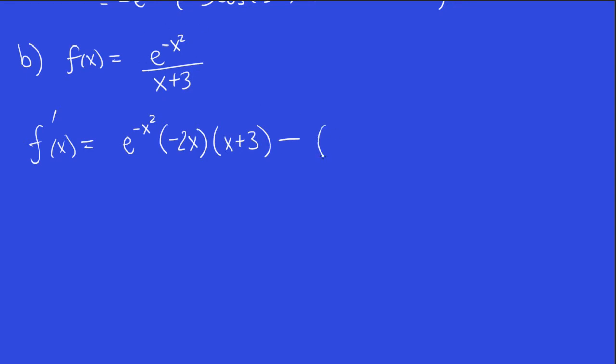This is quotient rule, so we have a minus here. Then we leave the top alone, and we multiply by the derivative of the bottom. The derivative of this is simple. It's 1 plus 0, which is just 1, all over the bottom squared, x plus 3 squared.